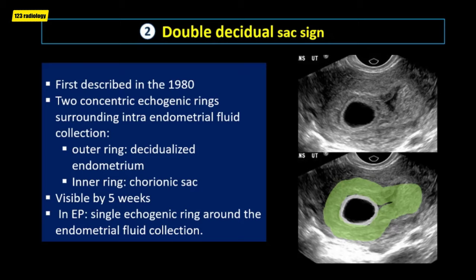The outer ring is the decidualized endometrium, while the inner ring is the chorionic sac. It is seen at 5 weeks of gestation by transvaginal ultrasound. Conversely, in ectopic pregnancy, the decidual reaction presents only a single echogenic ring around the endometrial fluid collection.